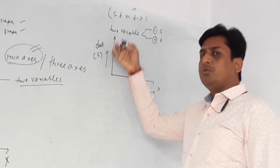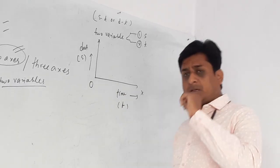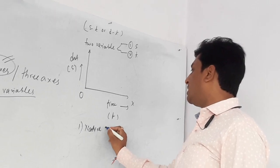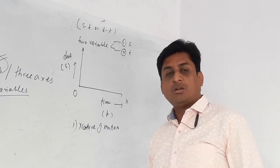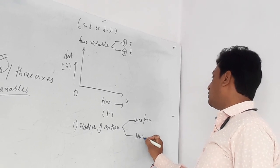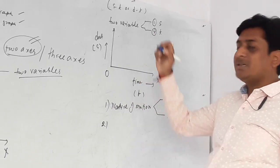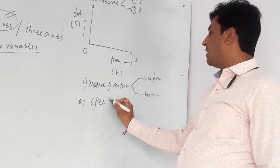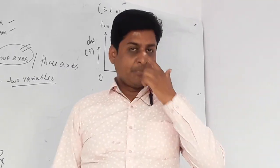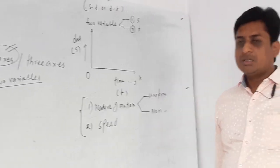From the distance-time graph, you can determine two things. First, the nature of motion — whether motion is uniform or non-uniform. Second, because it is a distance-time graph, you can calculate speed, since speed equals distance divided by time. So if distance and time are both given from the graph, you can calculate speed.